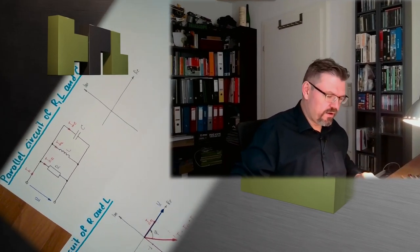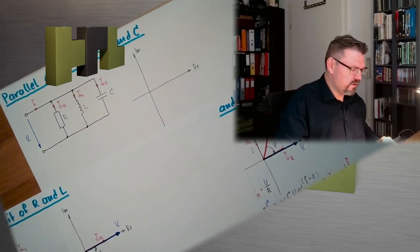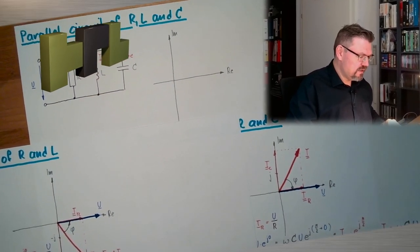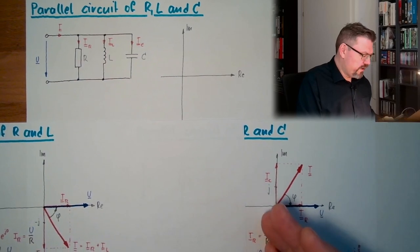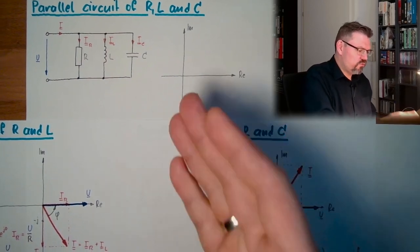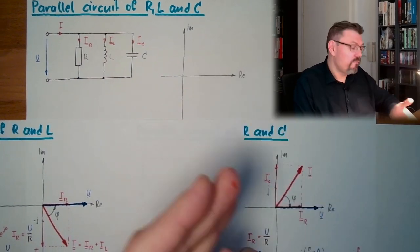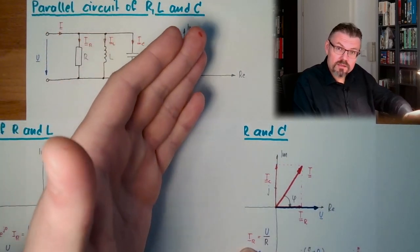Here was the parallel circuit of R and L, and here was the parallel circuit of R and C. These were the two pointer diagrams, and I will just draw the pointer diagram now for a parallel circuit of R, L and C.